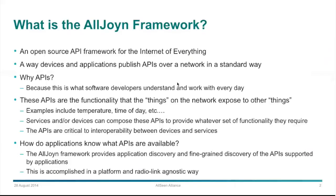The AllJoin Framework is an open source piece of software hosted by the Linux Foundation, run by the AllSeen Alliance. What it allows for is the ability for developers to use AllJoin to publish APIs across a network — local, in proximity. This isn't going out to the cloud. This is about talking to other devices and AllJoin applications that are on the same network.